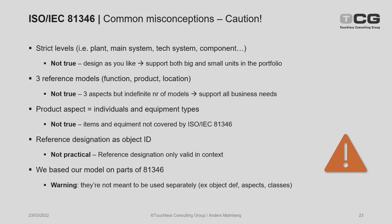Some misconceptions: many believe that 81346 dictates strict levels — for instance, plant, main systems, technical systems, and components — like four fixed levels. That is absolutely not true. You design as many levels as you need, which enables you to express a small pumping station in a network as well as a major plant, going as deep or as shallow as required.